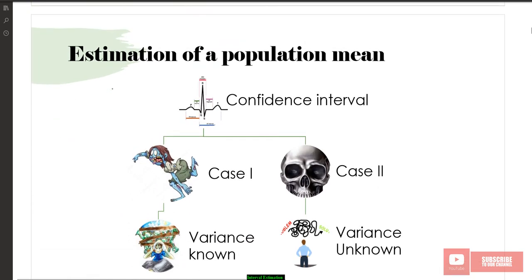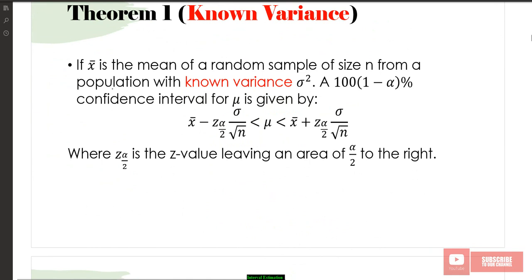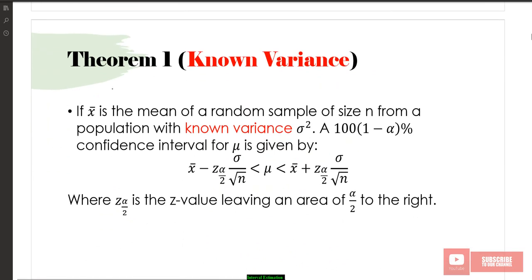We're going to learn interval estimation on population mean and population variance. For population mean, we have two cases: when the population variance is known, and when the population variance is unknown. Based on theorem number 1, this covers the case when the population variance is known.